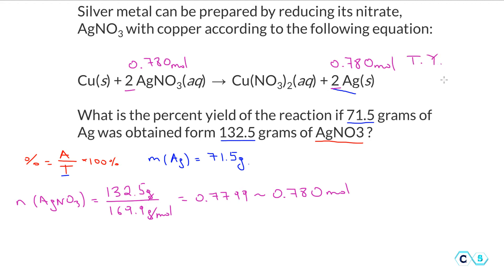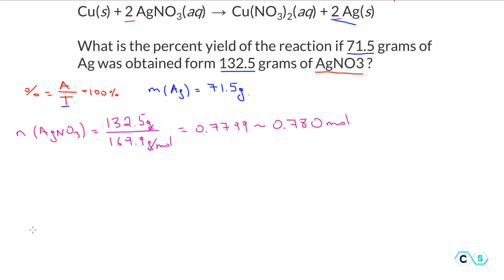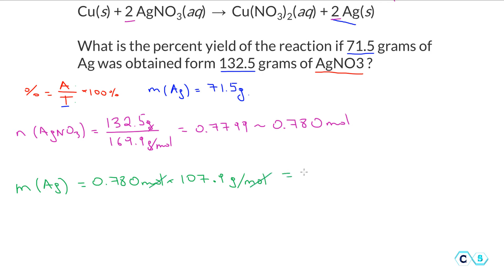This is how much silver is expected to be formed in theory — our theoretical yield in moles. We need to compare actual yield to theoretical yield using the same units, so let's convert to mass. The theoretical mass of silver is 0.78 moles multiplied by the molar mass, 107.9 grams per mole, which gives us 84.2 grams of silver.